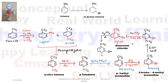Then we perform a diazotization reaction in the presence of sodium nitrite and hydrochloric acid at 0°C. The NH₂ is converted to diazonium chloride. We then heat this diazonium chloride with H₃PO₂, which removes the N₂Cl⁻ and replaces it with hydrogen. This gives us meta-bromotoluene.